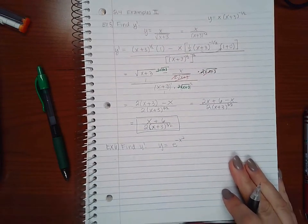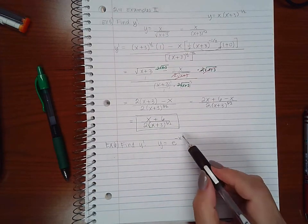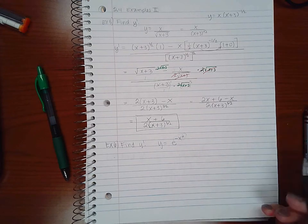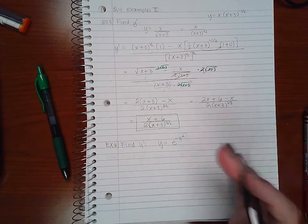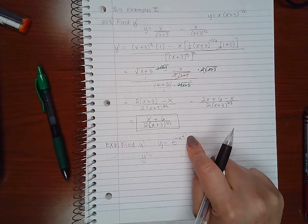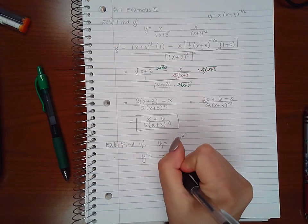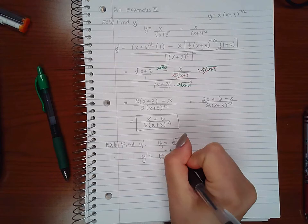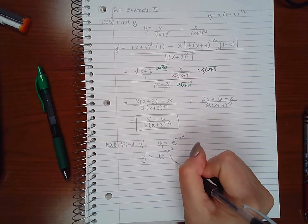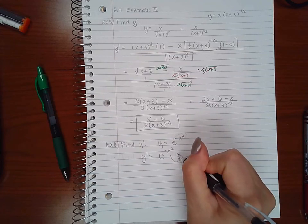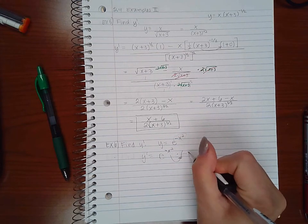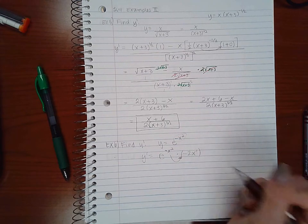For example 6, I do have an inner and outer function. My inner function is negative x squared, my outer function is e to the x. So what I'm going to do here when I take the derivative is I'm going to take the derivative of an exponential, and the derivative of an exponential is e to the same exponent. But because my exponent was not just an x like the normal exponential rule, I do have to apply the chain rule and take the derivative of this exponent, which will be negative 2x to the 1.